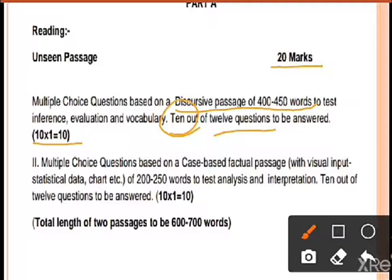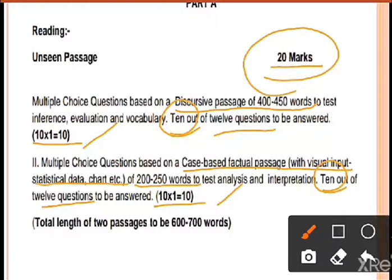The second passage is a case-based factual passage with visual inputs like statistical data or charts. This passage will be 200-250 words. Again, 12 questions will be asked, out of which 10 need to be attempted, 1 mark each. The total marks will be 10. So this 10 and this 10 makes a total of 20.